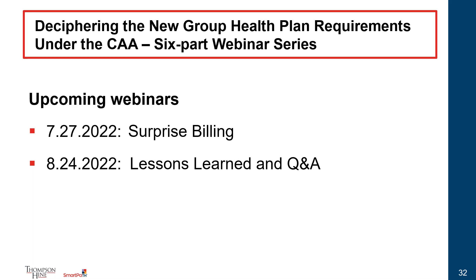A question from Kim in the field relates to Rx reporting plan-specific information that cannot be aggregated: will the report require separate reporting for each coverage option? Commentary provided by Kim states that the provisions are applicable to group health plans and group health insurance issuers offering group or individual health insurance coverage, and that "plan or coverage" refers to a group health plan or health insurance coverage. As a result, it doesn't appear to mean coverage option — it applies to the plan as a whole and not to each individual coverage option.